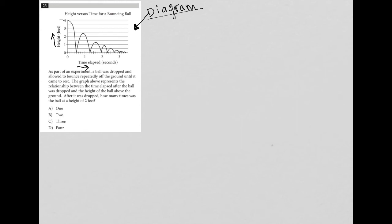The last thing we see: after it was dropped, how many times was the ball at a height of two feet? Looking at the graph, I could just draw a horizontal line through two feet, all the way to the end here. And then ask: how many times does the curve that represents the ball's height as it bounces cross this horizontal line?